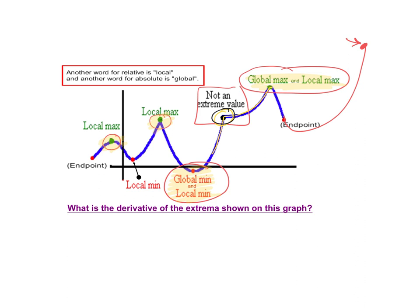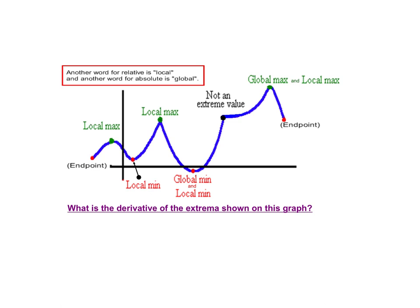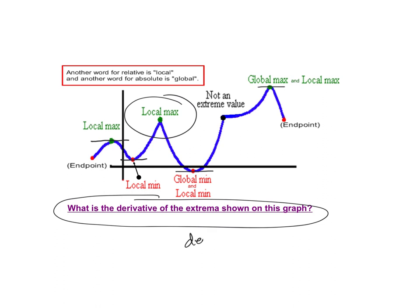Looking at this graph, what is the derivative at these extreme values? The slope is zero. But what about a sharp point — can we take a derivative of a sharp point? No — the derivative doesn't exist there. So basically, if you want to find where an extrema is, you set the derivative equal to zero or find where the derivative does not exist. Most of the time it's set equal to zero, but don't forget the 'does not exist' case.